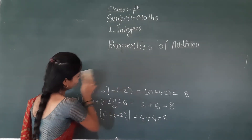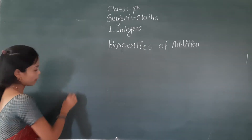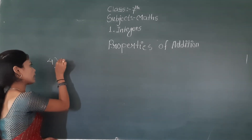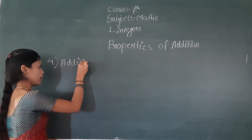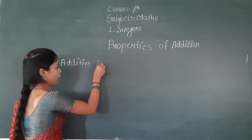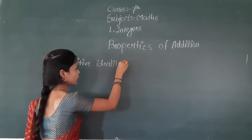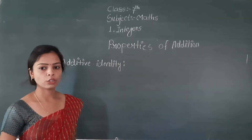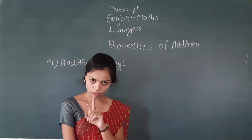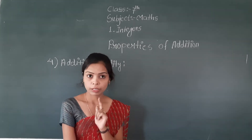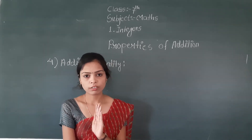Now we learn the fourth property — additive identity. What is identity? Identity means unique. If you add any integer with it, its value doesn't change.